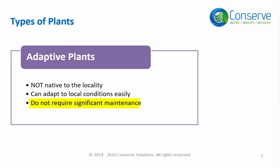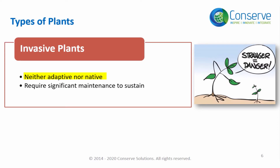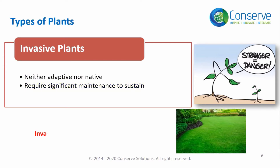Adaptive plants are not native to the locality but they can adapt to the environment without significant maintenance like pest control, fertilizers, or irrigation. Invasive plants are neither native nor adaptive — they require significant maintenance to sustain. Turf or lawn is considered invasive for all climatic conditions.